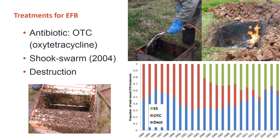If a colony is found to be infected with EFB, it can be treated in one of three ways depending on the time of year, the size of the colony, and the severity of the infection. The treatment options available in the UK are antibiotic treatment with oxytetracycline (OTC), a shook swarm, or destruction. Generally, OTC isn't used very much anymore in the UK — we tend to use it at the end of the season in autumn, while during the season the preference is to treat with a shook swarm or destruction.